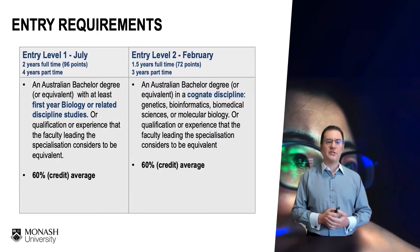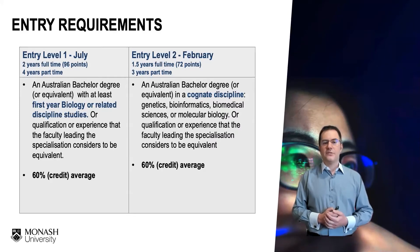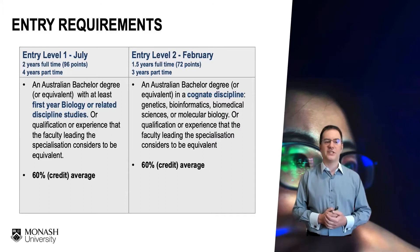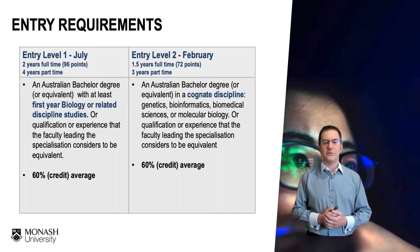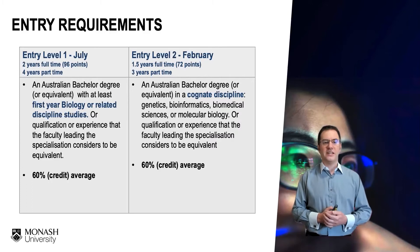There are two different entry points. The first is for students with a background in biology but not necessarily in genetics or molecular biology — those students enter the two-year version of the masters, where in the first semester you get an introduction to genomics and genetics. You need a 60% credit average to enter that program. If you've already got an undergraduate degree covering these topics, such as a major in genetics or biomedical sciences, you could enter at the next intake in February 2022 or July 2021, again needing a 60% credit average. If you have any questions about whether your prior experience qualifies you for entry one or two, you can always contact us or Michaela and the team.